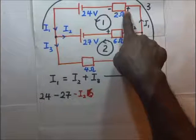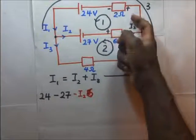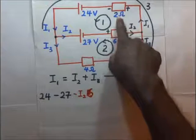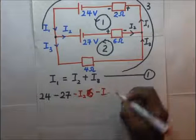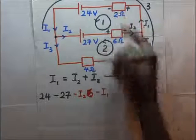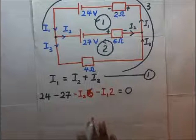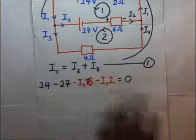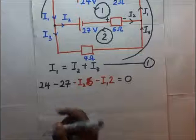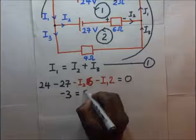For the next resistor, the loop is moving from positive to negative, from higher potential to lower potential, so there is a voltage drop here as well. This gives us negative I1 times 2 ohms. All of this is equal to zero. Rearranging with EMFs on one side and potential drops on the other, 24 minus 27 gives us negative 3, which equals 6I2 plus 2I1. That is our second equation.